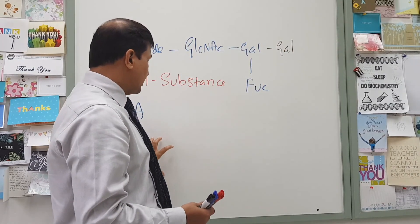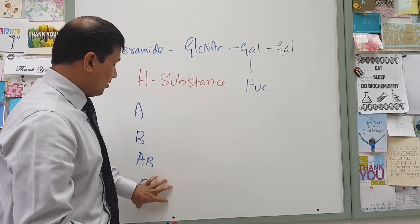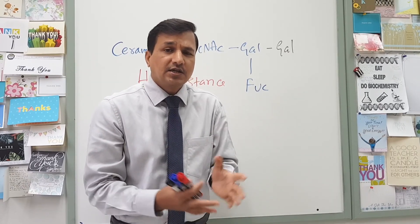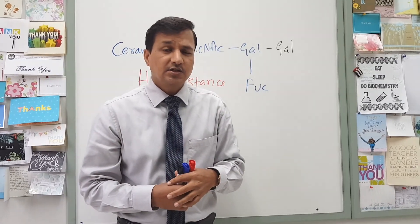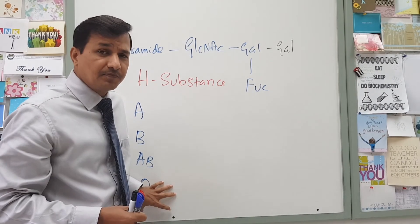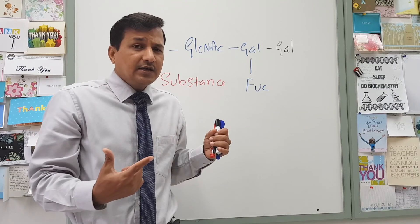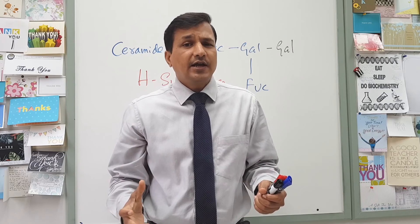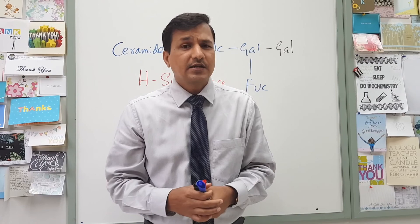They will have both antigens on their red blood cells. Now coming to the O blood group type — O blood group persons don't have any of these antigens; they don't have A antigen and they don't have B antigen. They will only have H substance on their red blood cells, so they belong to the O type of blood group. Since they don't have A antigen or B antigen on the surface, they will express both anti-A antibody and anti-B antibody in their serum.